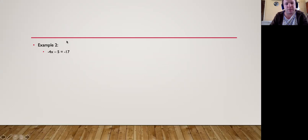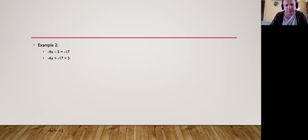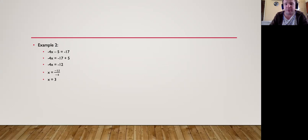We move the minus 5 over to the other side — it becomes plus 5. Notice we keep the minus on the 4x. So minus 4x is equal to minus 17 plus 5. When we divide by minus 4 we keep the minus sign. Minus 17 plus 5 gives minus 12, and minus 12 divided by minus 4 gives 3. Therefore x equals 3.